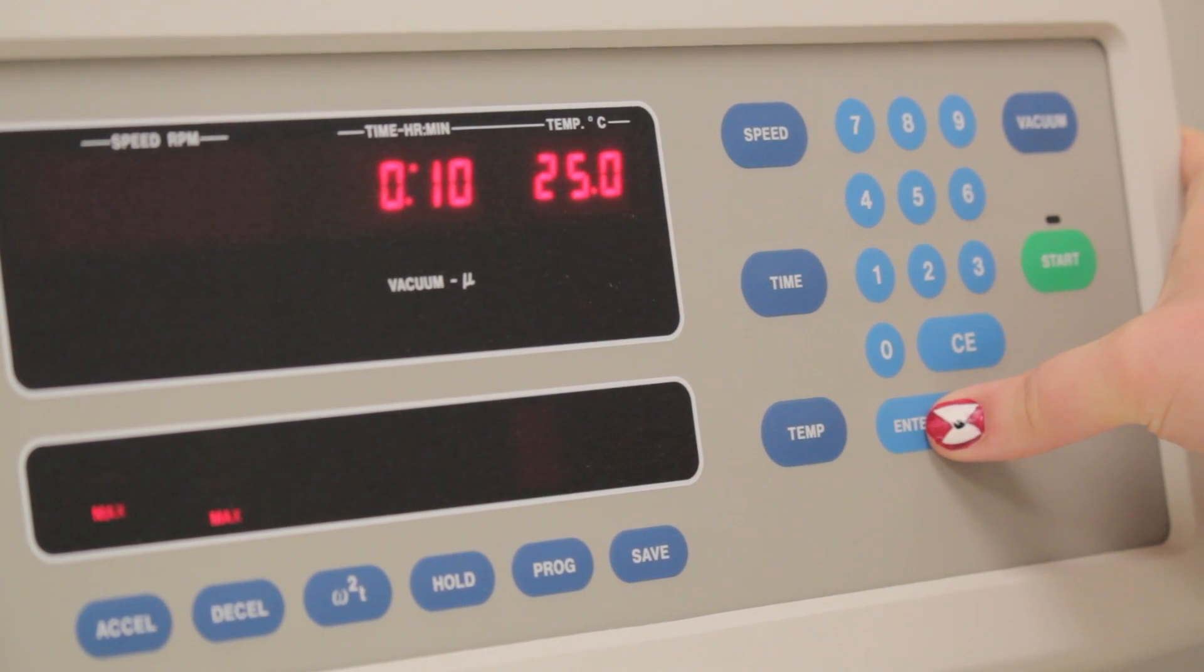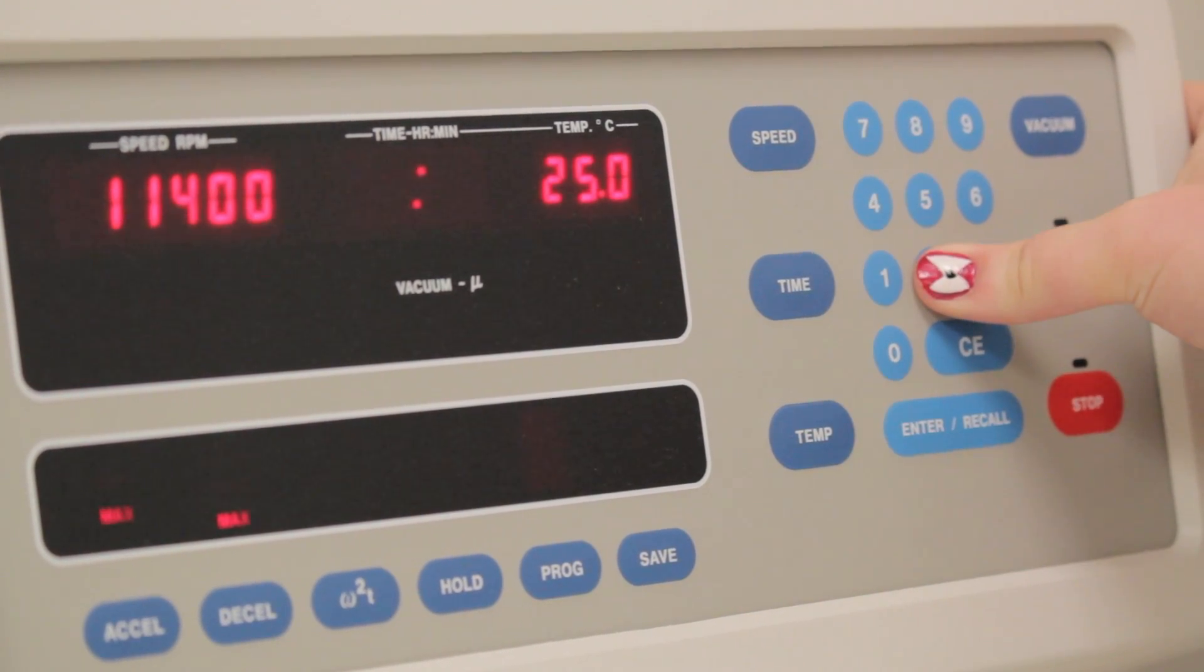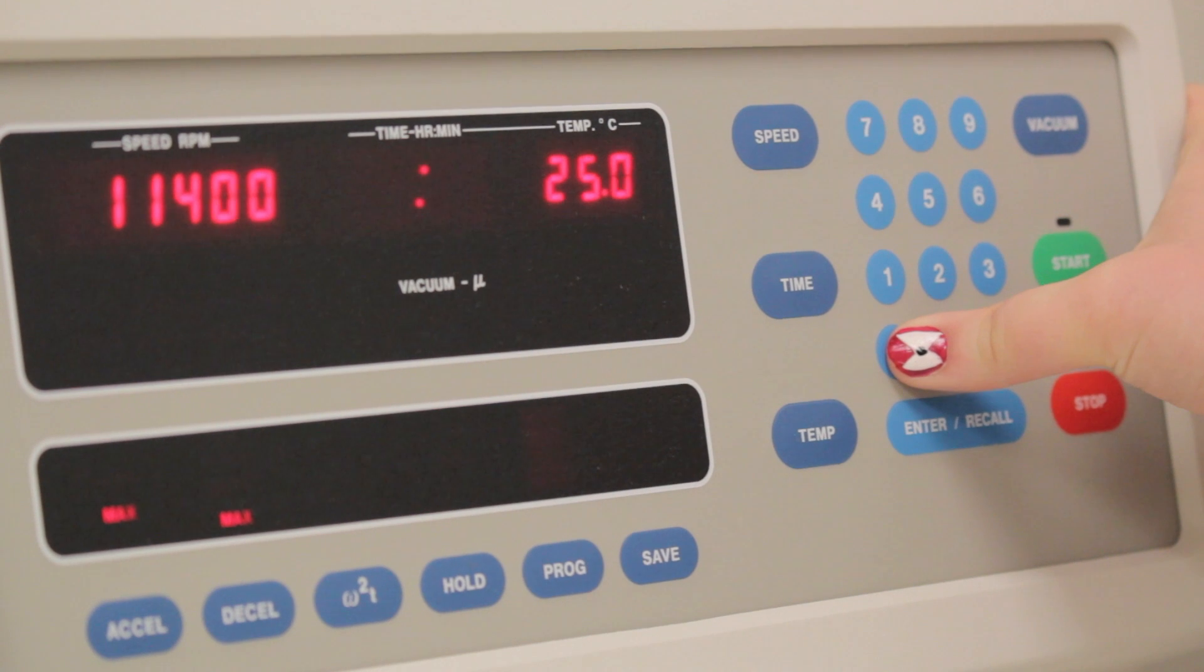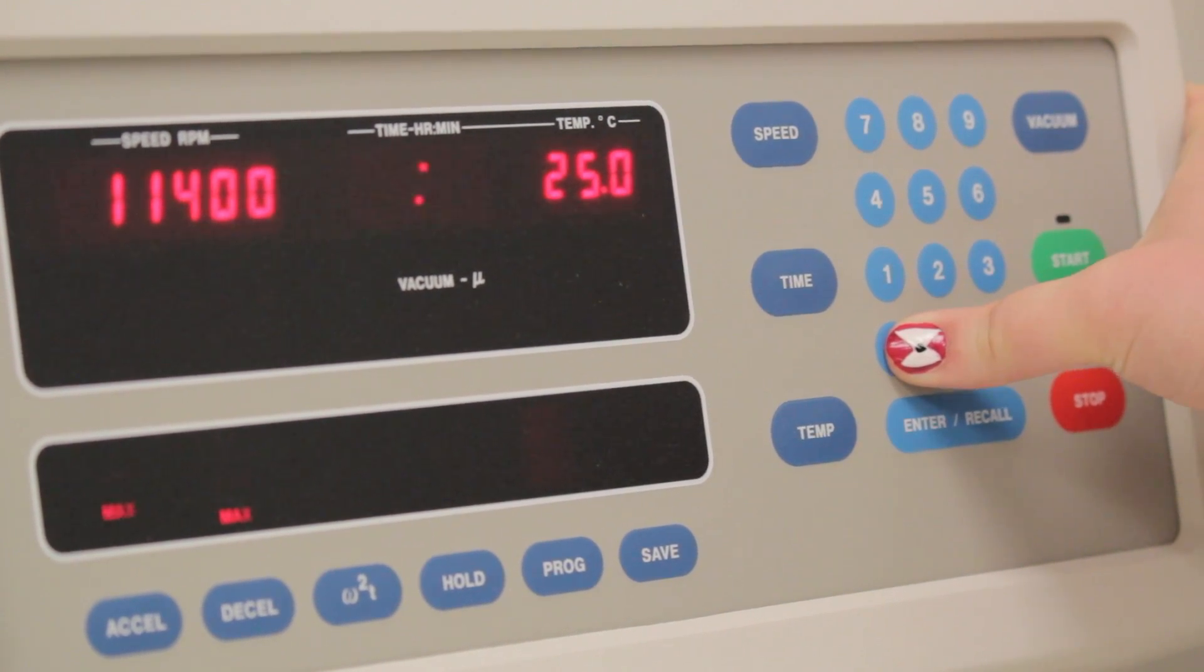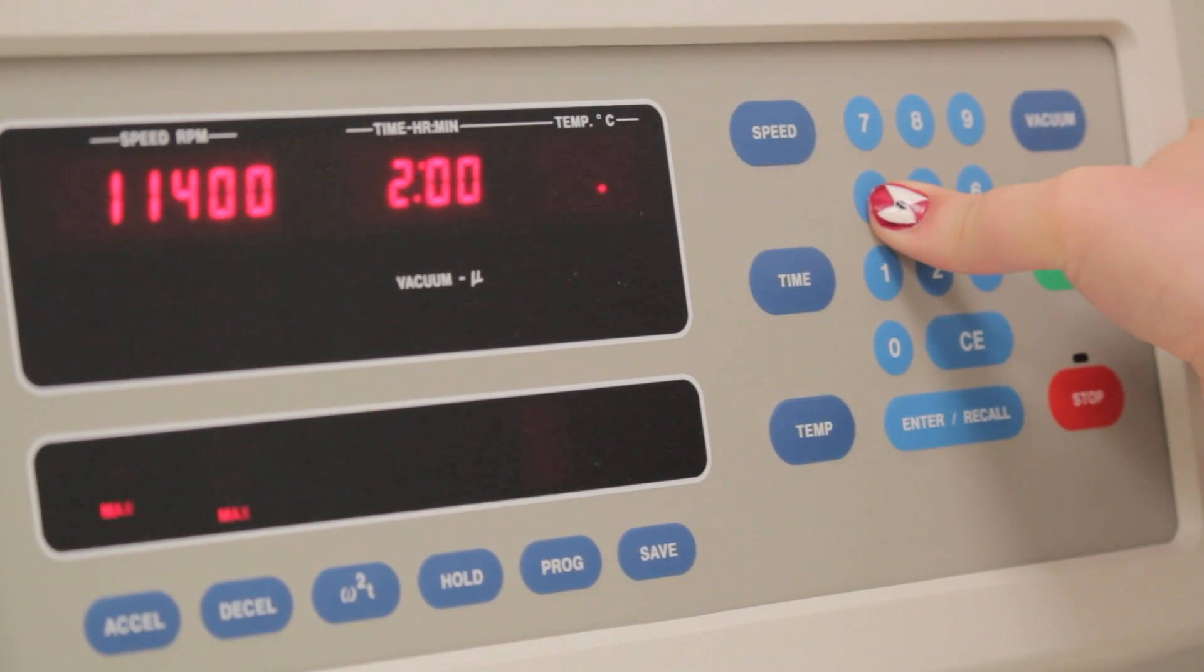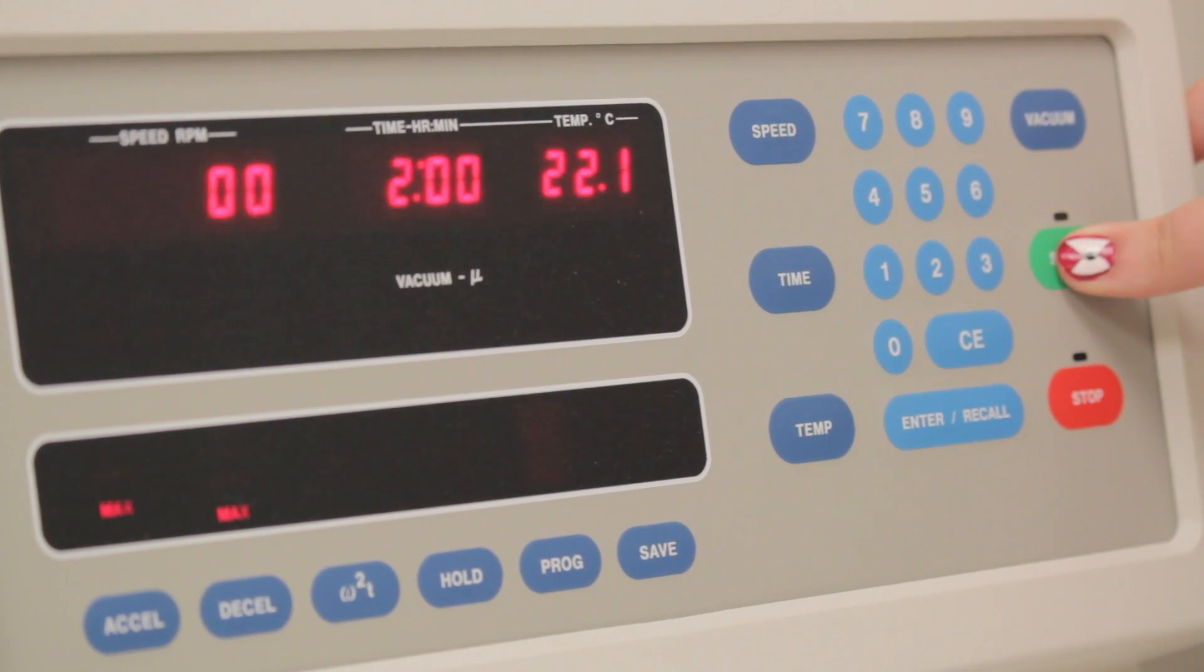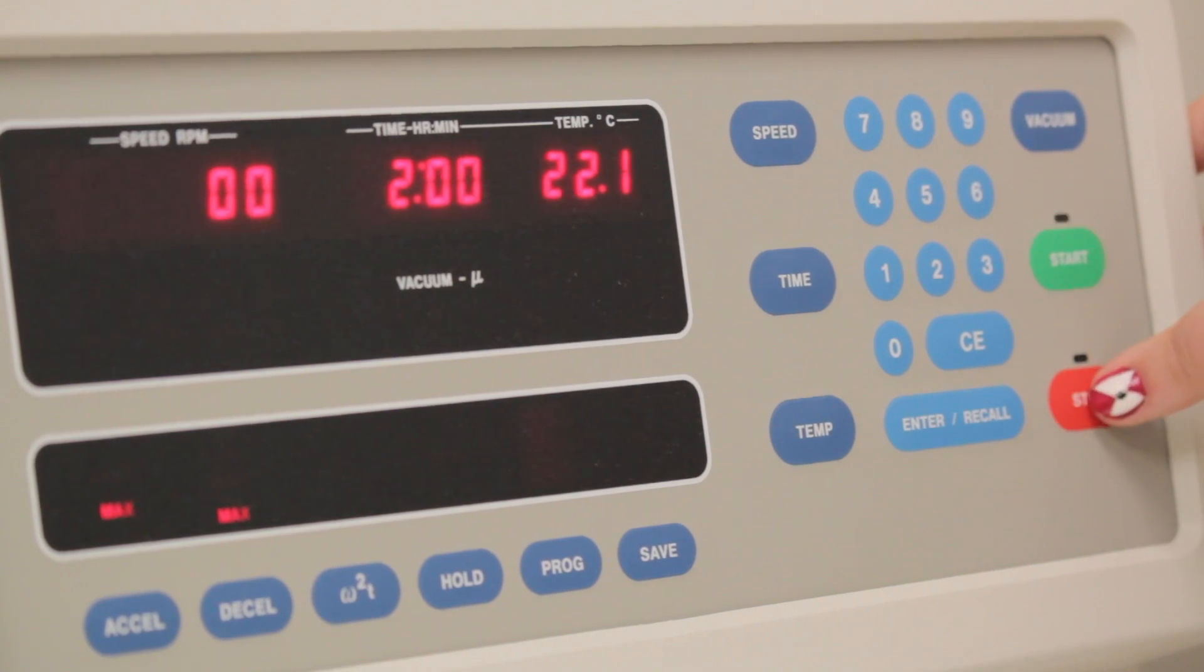Using the centrifuge, the process used in the McKay laboratory is the first spin, 2,500 times G for 10 minutes that pellets cell debris. The second spin, 25,000 times G for 1 hour that pellets organelles. The third spin, 114,000 times G for 1 hour that pellets exosomes.